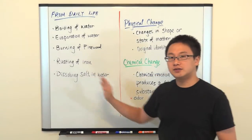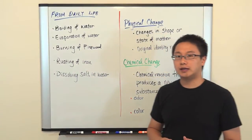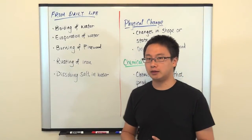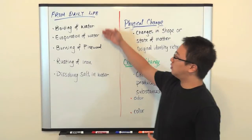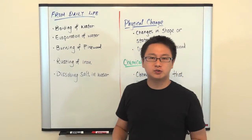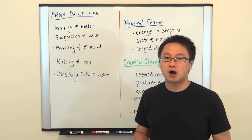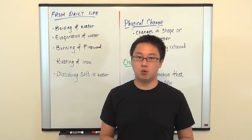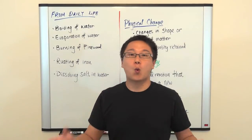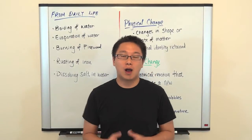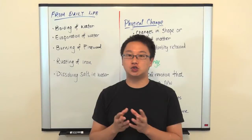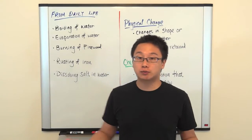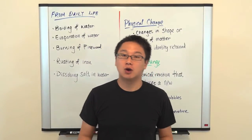Now let's look at boiling water and evaporation of water together, since these two examples are very similar — both involve a change of state of water. You might wonder: how do we know there's no change in identity? It disappeared, so could it have changed to something else? Well, that's a very good question. What we can do is use condensation — collect the steam or water vapor on a cool surface and collect the resulting liquid.